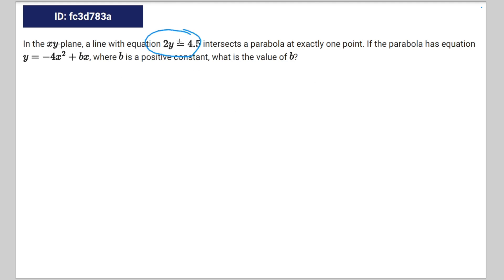You can rewrite this equation as y equals 2.25, and then you can leave the bottom equation as it is, y equals negative 4x squared plus bx.